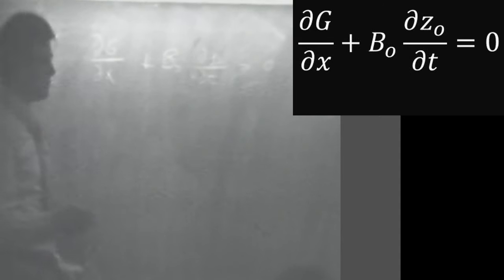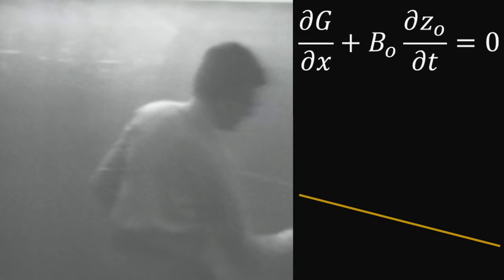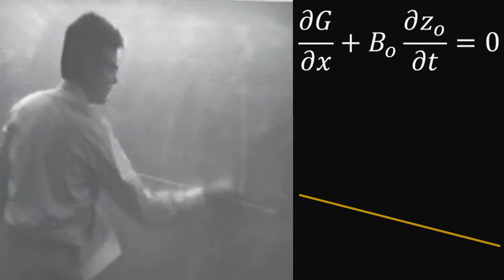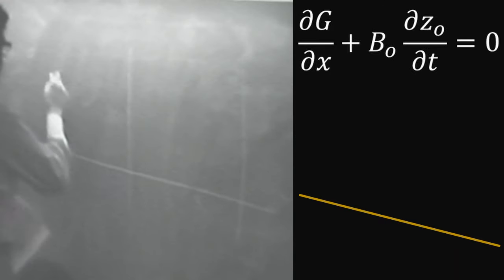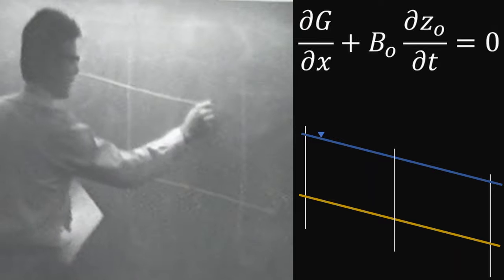In a sketch, then, what we see is there's a stream bed with our three cross-sections positioned on that stream bed. And we have a water surface profile.